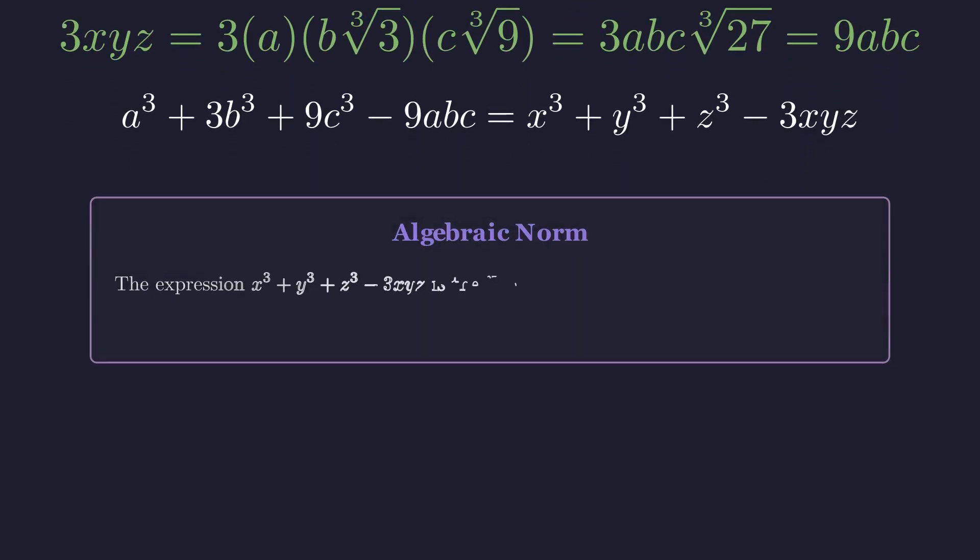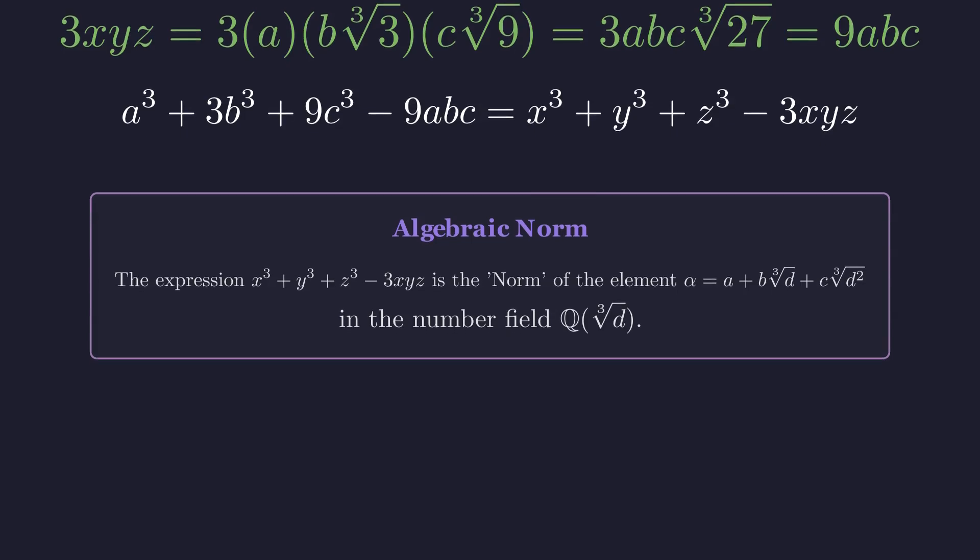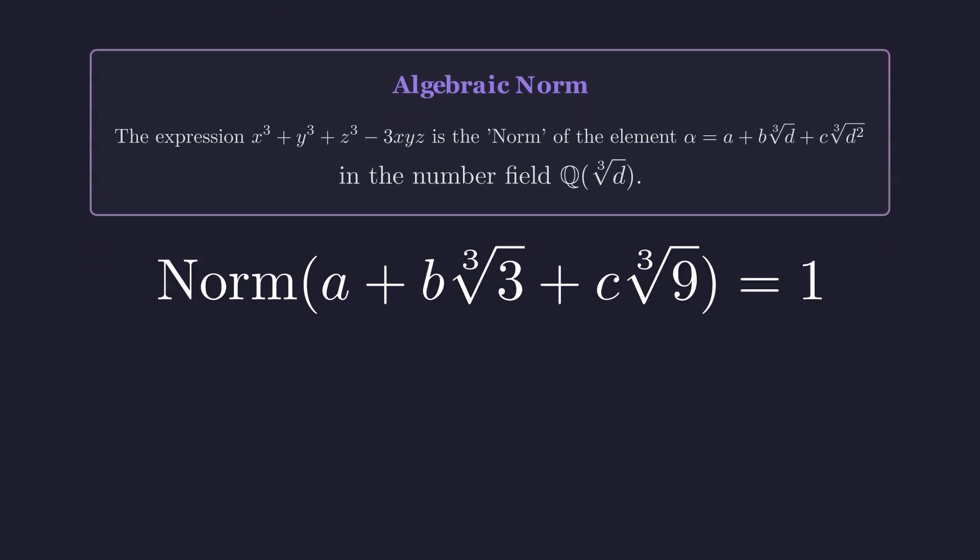This structure is known in abstract algebra as a norm. For the number field generated by the cube root of d, the norm of an element is a function that maps it to a rational number, revealing its algebraic size. In our case with d equal to 3, our equation simply states that the norm of this number is equal to 1.